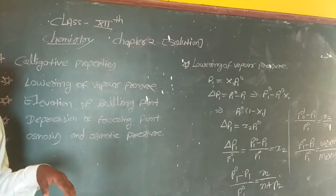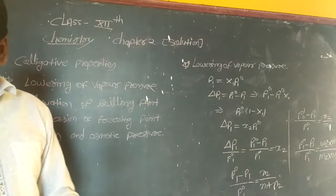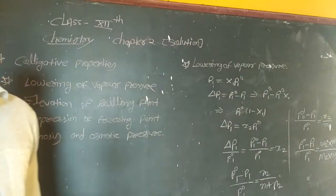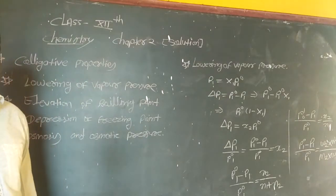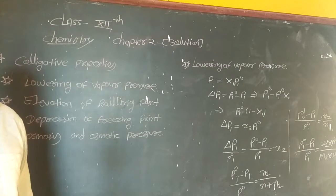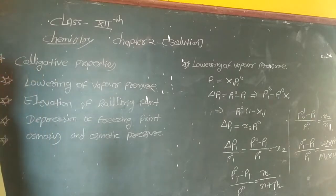What is a colligative property? First, all these properties depend on the number of solute particles irrespective of their nature. The colligative property depends on the number of particles, not on the qualitative property.